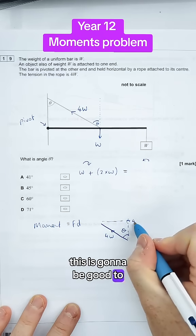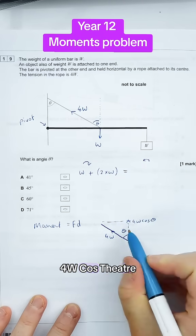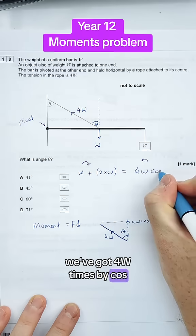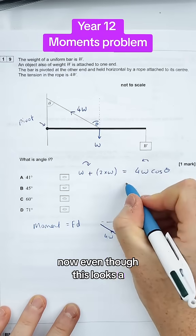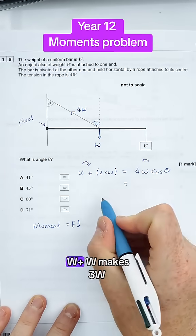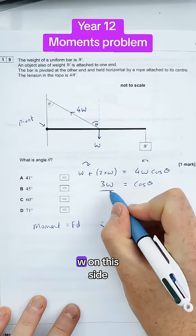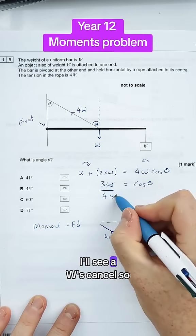We hopefully should see that this is going to be equal to 4W cos theta, because it's the adjacent. So therefore, we've got 4W times by cos theta. Now, even though this looks a bit messy still, we can simplify it. 2W plus W makes 3W. And then to find cos theta, I'm just going to get the 4W on this side. Obviously, the W's cancel.